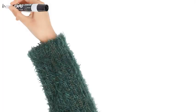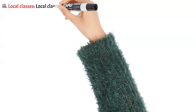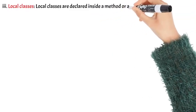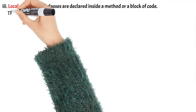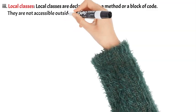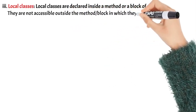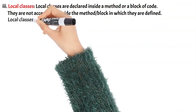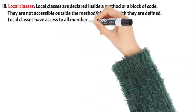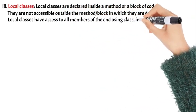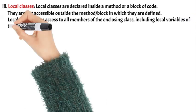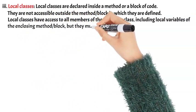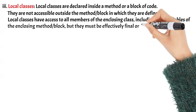3. Local Classes: Local classes are declared inside a method or a block of code. They are not accessible outside the method or block in which they are defined. Local Classes have access to all members of the enclosing class, including local variables of the enclosing method or block, but they must be effectively final or final.